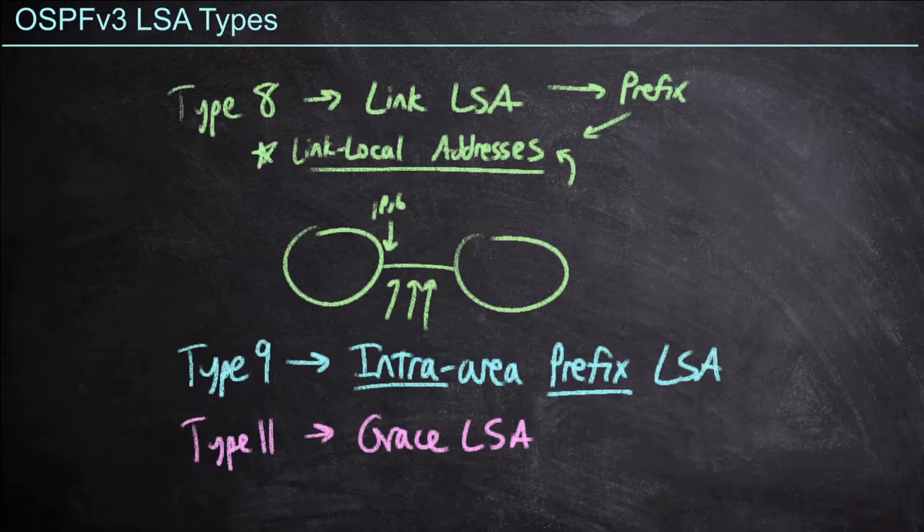Again, we don't have those opaque LSA types in OSPF v3, which is how we handle graceful restarts within OSPF v2. So OSPF v3 handles that with its own dedicated LSA type, the type 11 grace LSA, which by the way is not flooded beyond a single link. That is for neighbor-to-neighbor communication only.